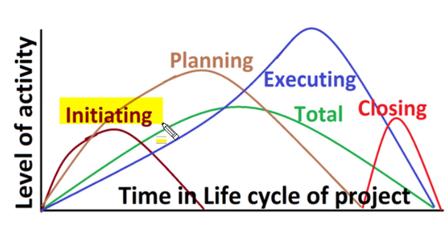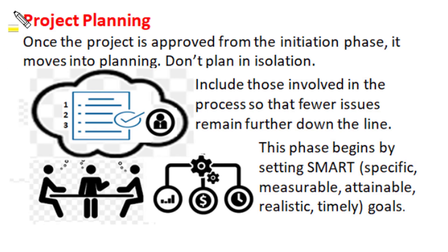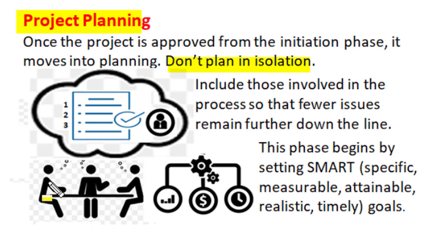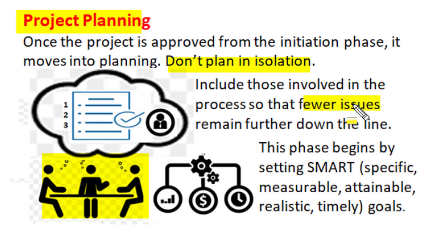Once the project is approved, the activity of the initiating phase increases its level at a very fast rate as shown by this brown characteristic, and at the same time the project also undergoes the planning phase. One important part of project planning is to not plan in isolation but include all those who are involved in the project or stakeholders, so that after this associative planning, fewer issues remain further down the line and the majority of issues will be handled during the planning stage only.